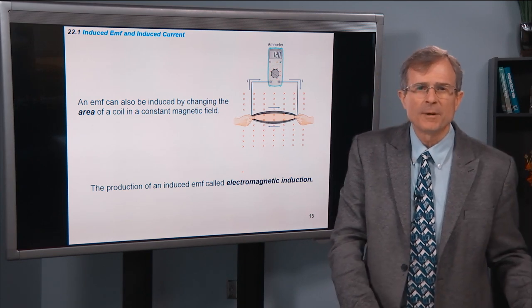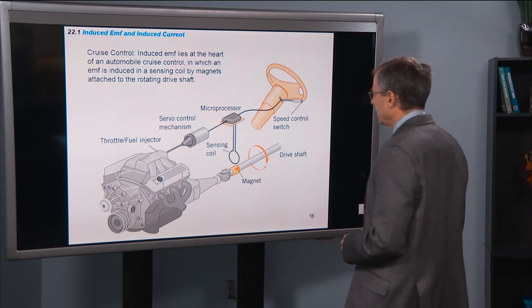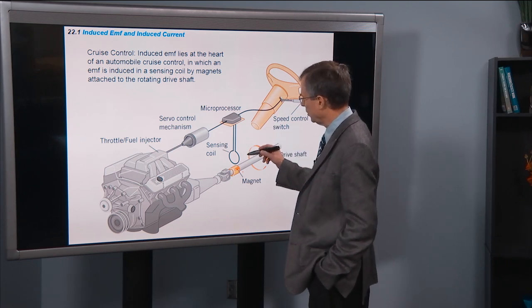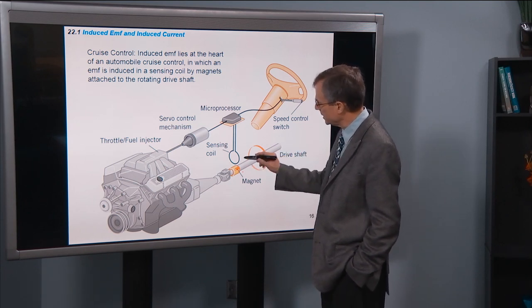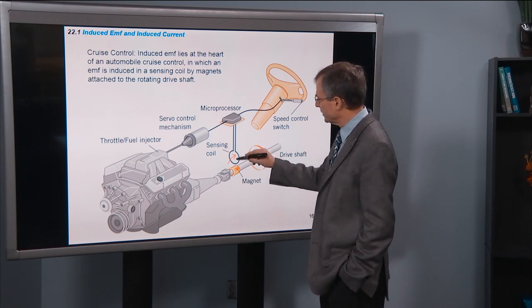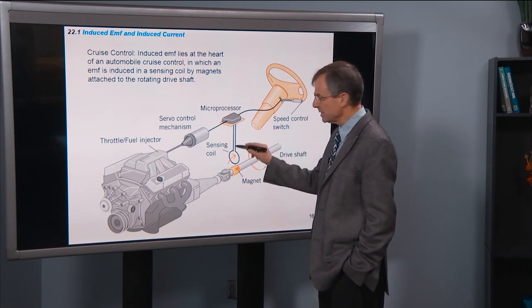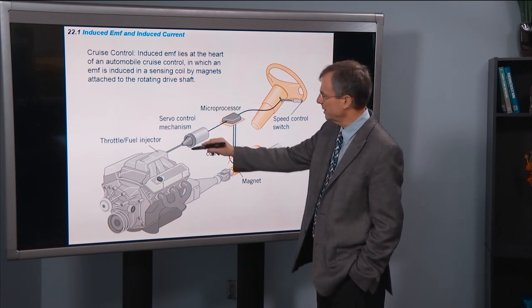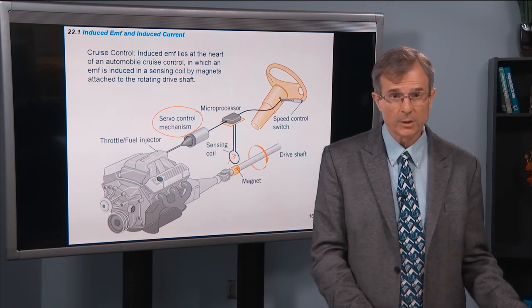And the production of this induced EMF is called electromagnetic induction. It's important in cruise control. When you set your cruise control, there's a little magnet in the drive shaft that rotates and changes the magnetic flux through this sensing coil. And that change in flux, magnetic flux through the sensing coil, produces a current in the coil. It goes to a microprocessor and then that controls a servo mechanism that tells your engine whether to speed up or slow down. At the heart of it though is Faraday's law.